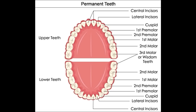Separated by the incisors, there are two canines each in the upper and lower jaw. Four premolars are present in each dental arch. Two premolars are located behind each canine in both arches; these help us crush food while chewing. Molars are classified into first, second, and third molars. Normally, six molars are present in each dental arch, located behind the second premolar on both sides of each arch. These are bigger than the premolars and help us grind food into smaller particles.